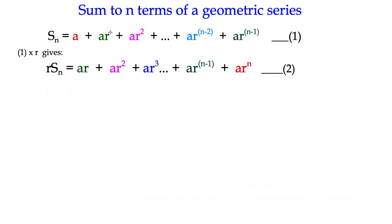So a becomes ar, ar becomes ar squared, and so on, and the last term increases the power n minus 1 by 1 to ar to the power n.